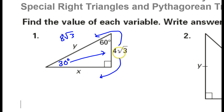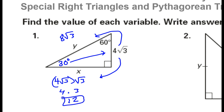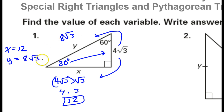For the long leg, you're supposed to take the short leg and then multiply it by radical 3. So if I take the short leg and multiply by radical 3, that should give me the long leg. Radical 3 times radical 3 is 3, so the answer here should be 12. So x is equal to 12 and y was equal to 8 radical 3.